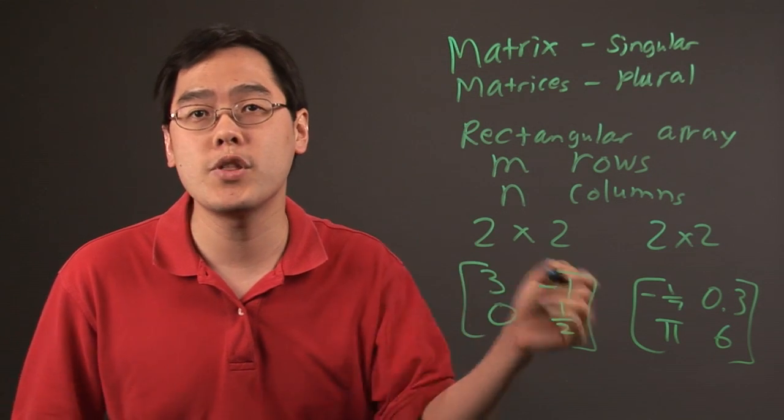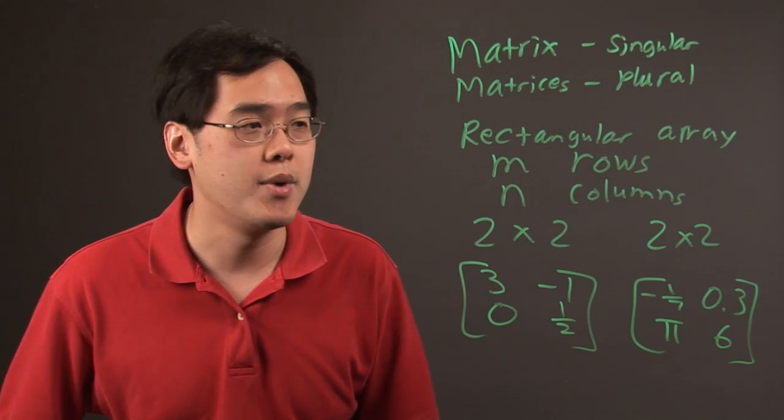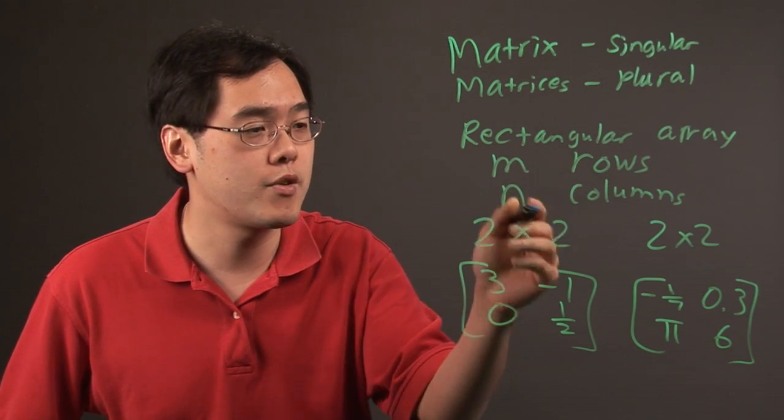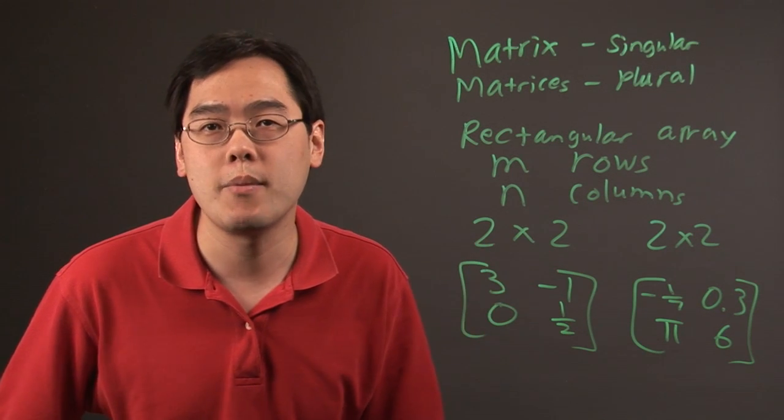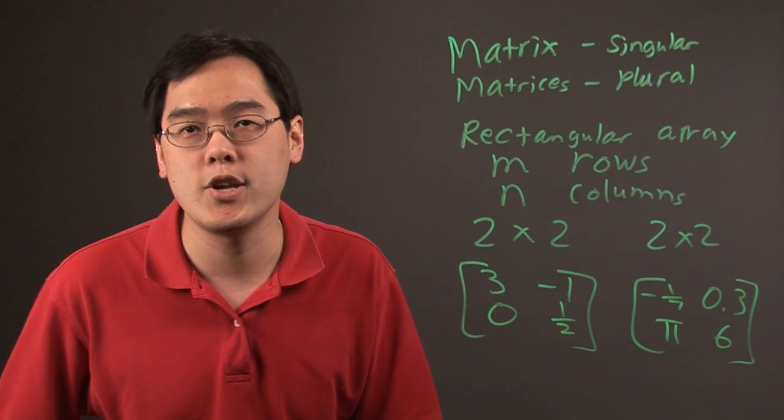So if you have one, you have a matrix. You have more than one, you have matrices. But bottom line is, as long as you have a certain number of rows and columns attached to it, you'll be good to go. I'm Jimmy Chang, and that's the definition of matrix and matrices.